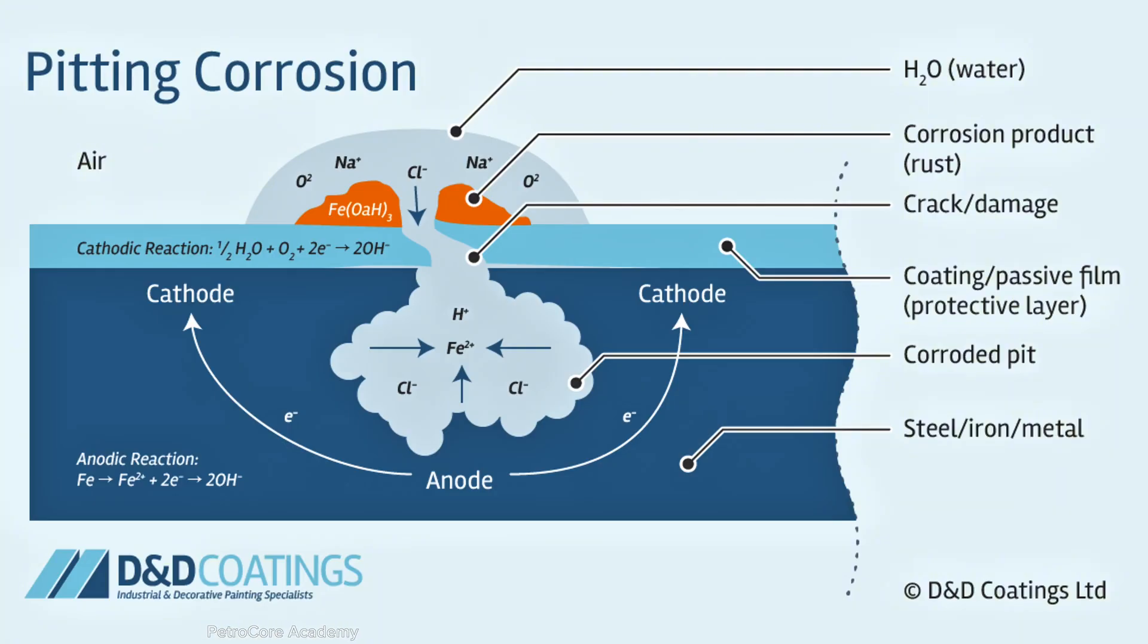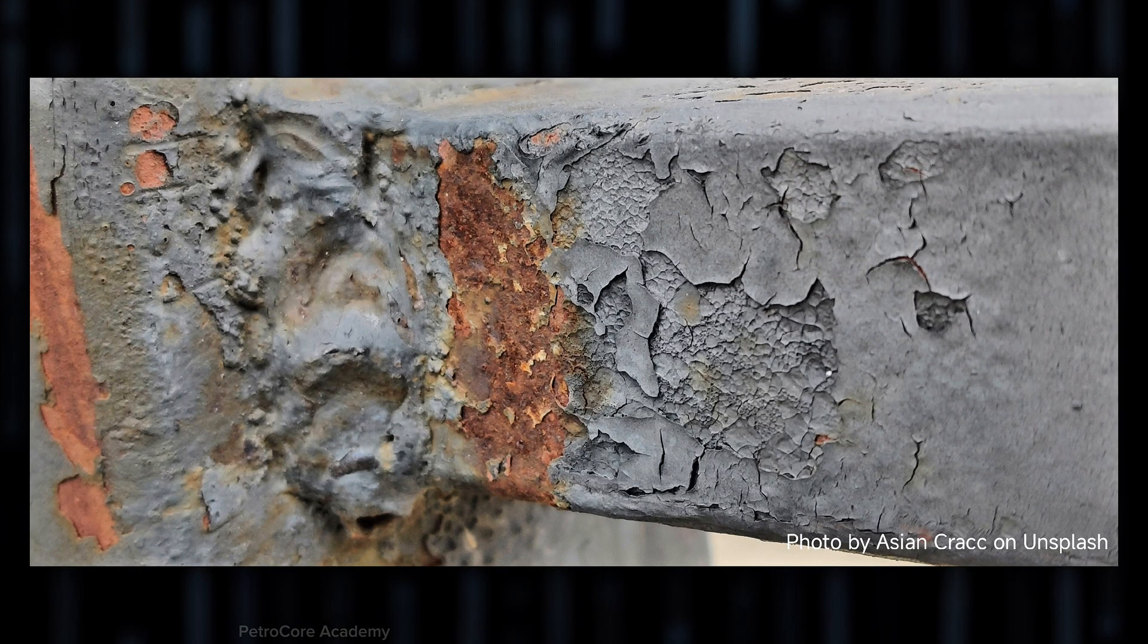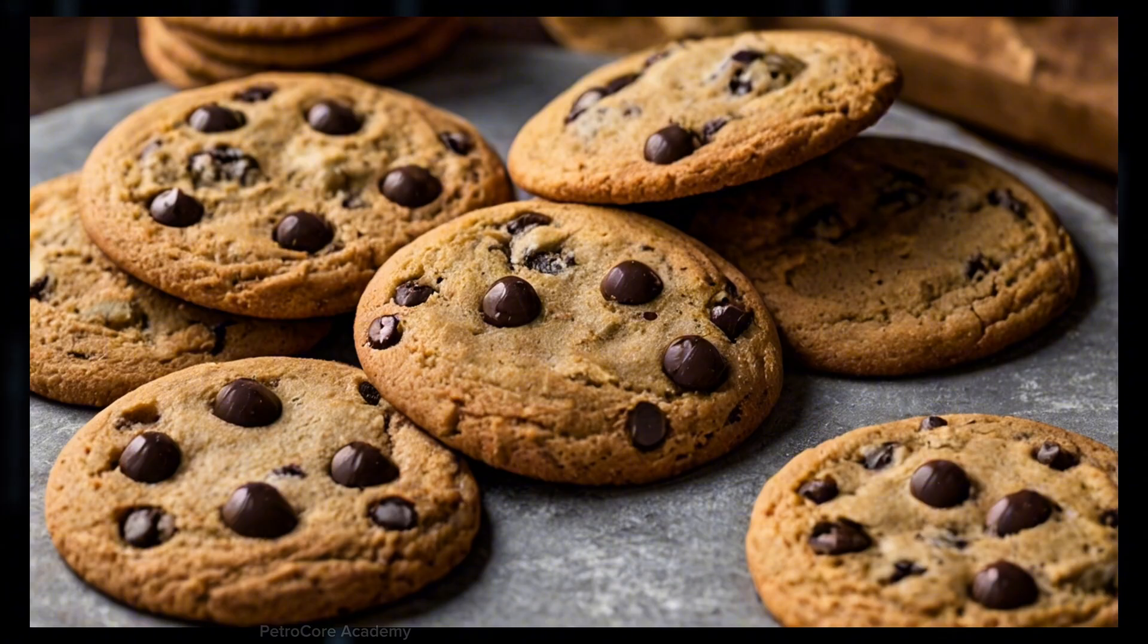Unlike uniform corrosion, which spreads evenly like peanut butter on toast, pitting focuses all its damage in concentrated spots. Like that one friend who eats just the chocolate chips out of the cookie.